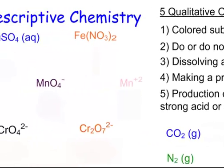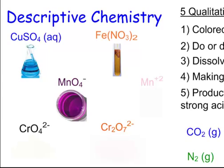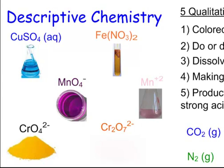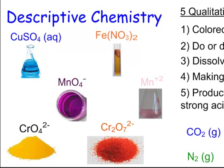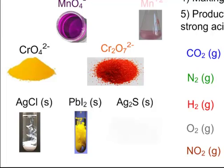Specific descriptive chemistry to know: copper sulfate is a blue solution. Iron(II) is a green solution; iron(III) is orange. Permanganate MnO₄⁻ gives a bright purple color, while Mn²⁺ is pink — we often use it in titrations. Chromate CrO₄²⁻ is yellow, and dichromate Cr₂O₇²⁻ is orange. Silver chloride is a common white precipitate. Lead iodide is a common bright yellow precipitate. Anything with a sulfide can be assumed to be a black precipitate.